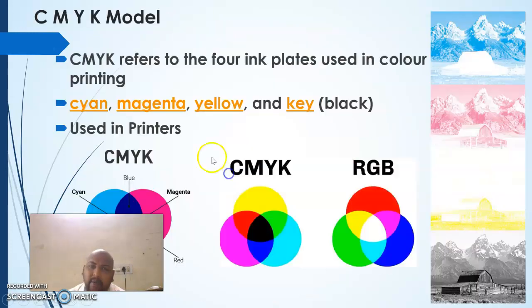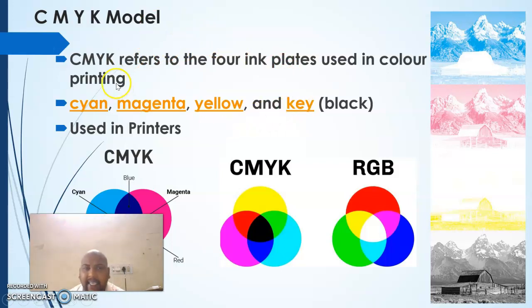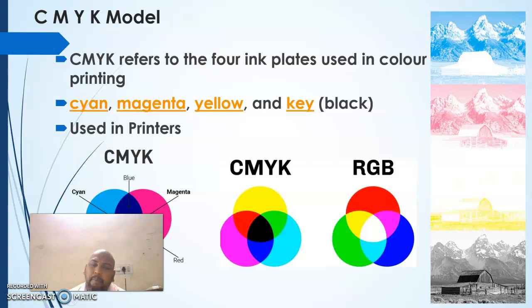In earlier printers, three colors were used. When printing black, all color inks are utilized maximally. To overcome this, black is used separately, called the Key (K). So the CMYK model is an addition of CMY plus Key (black), and it is also used for the purpose of printing.